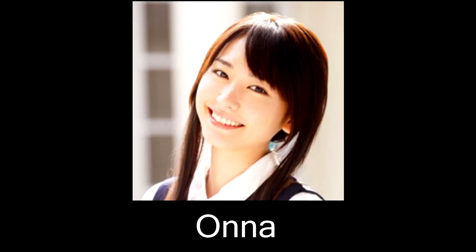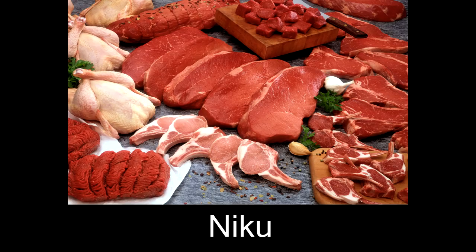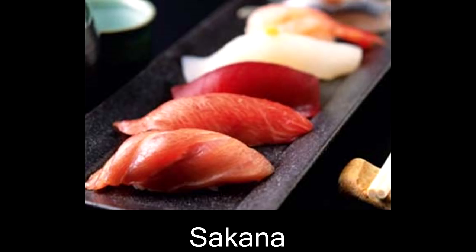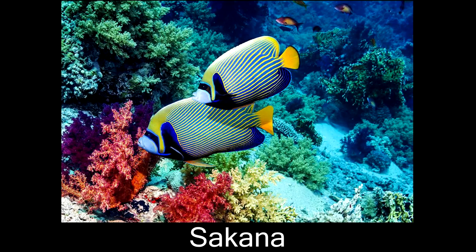Onna and otoko are identifiers to differentiate whether or not somebody is male or female, and they're also used for animals. Niku means meat, particularly any meat that you buy or cook. Just like in English, fish is identified differently than meat. So if what you want is specifically fish, then you use sakana. Also just like in English, sakana refers to both fish you can eat and also the living fish that swim around.